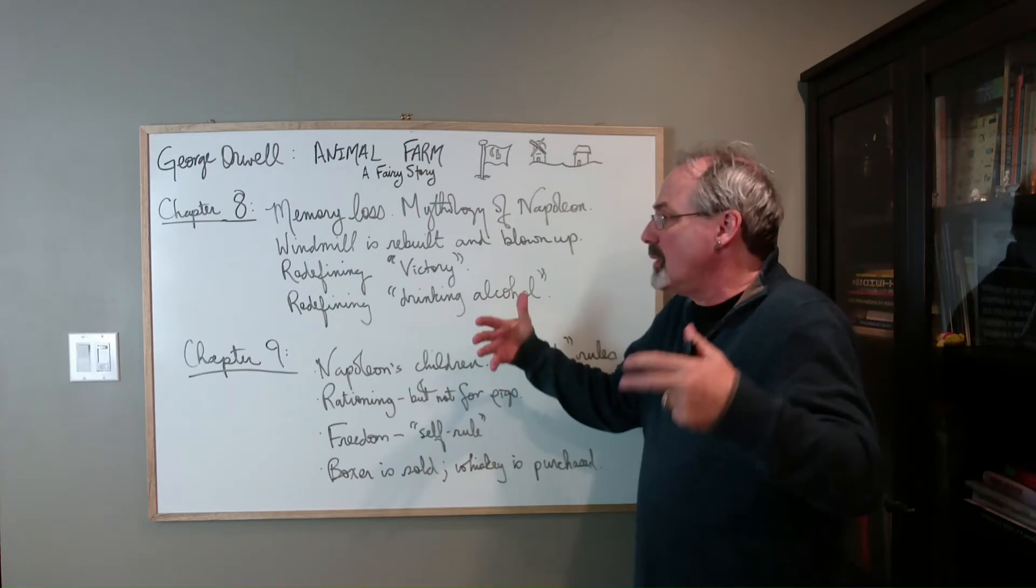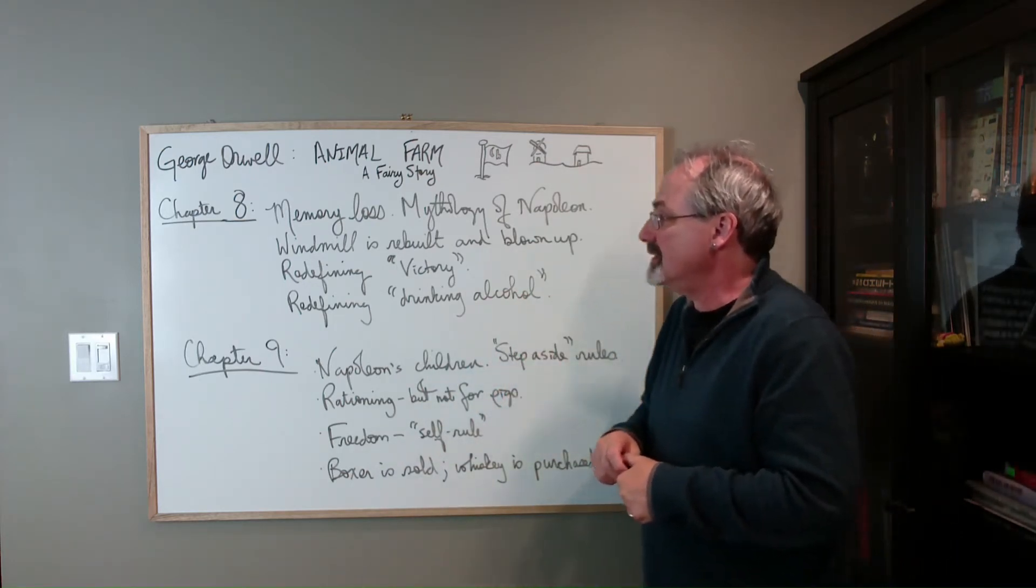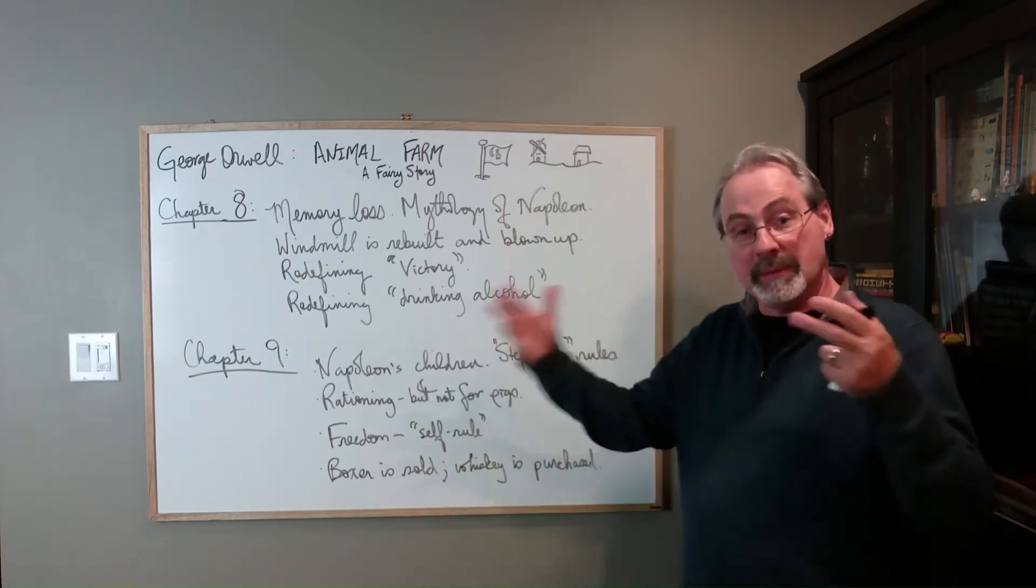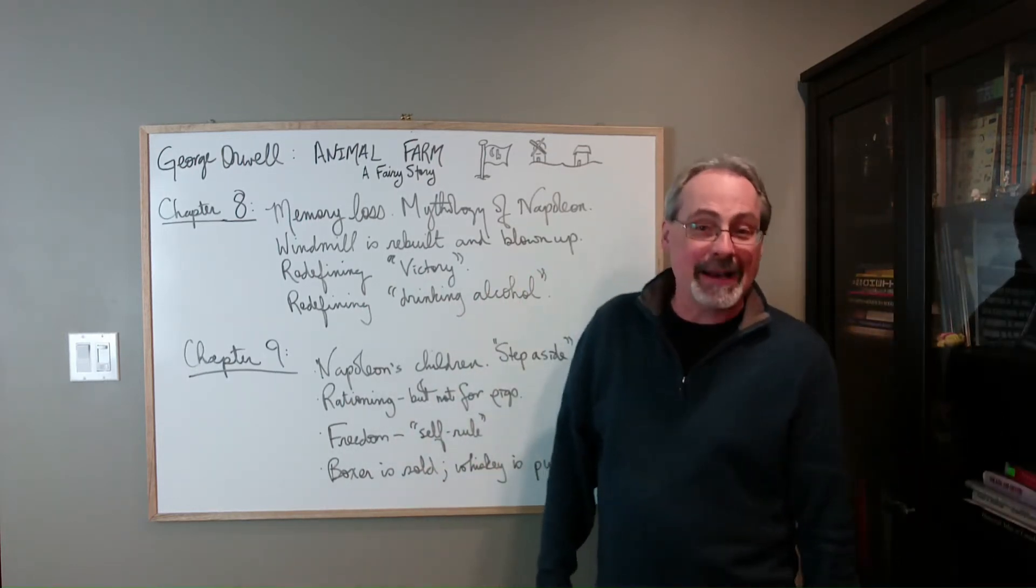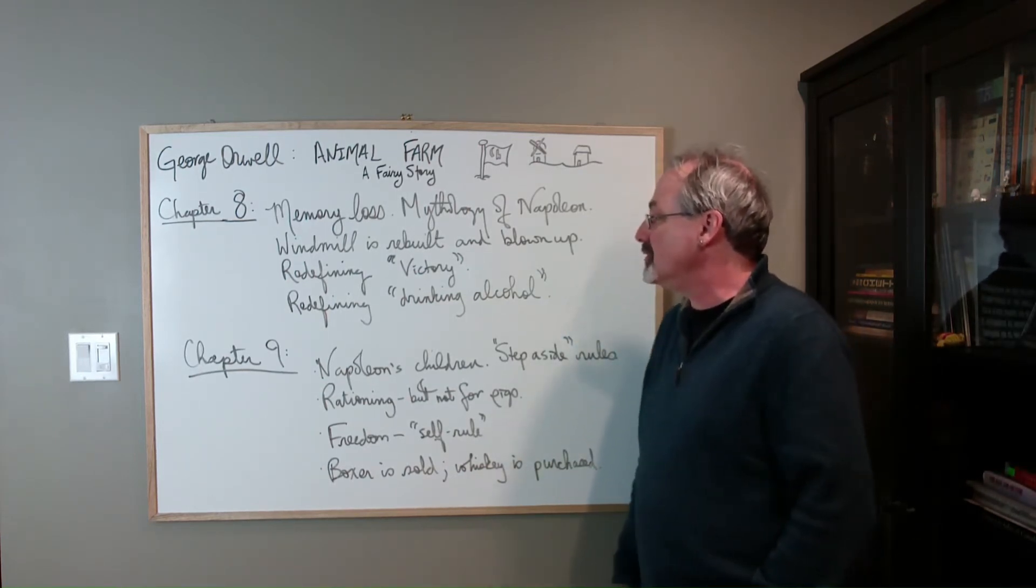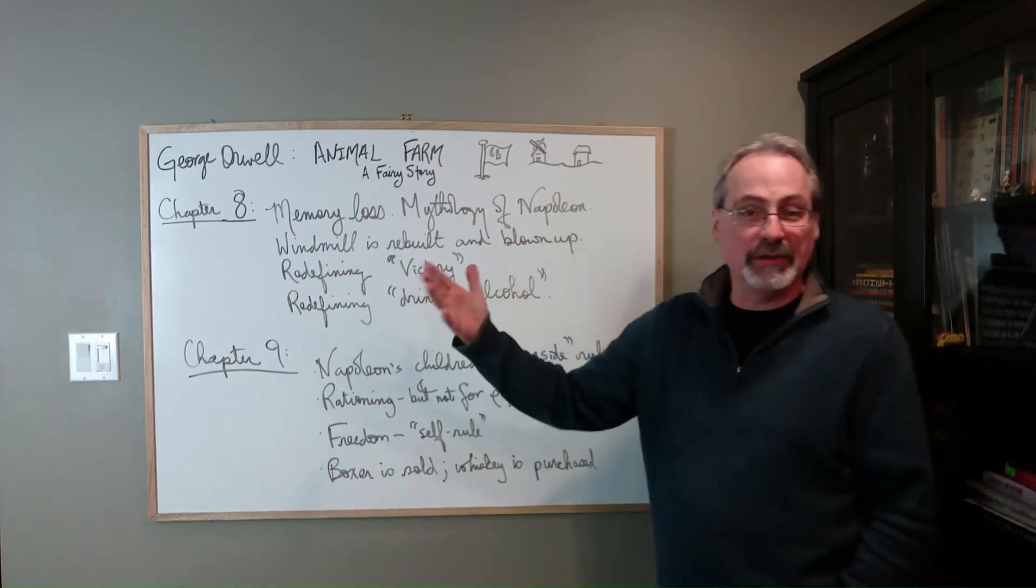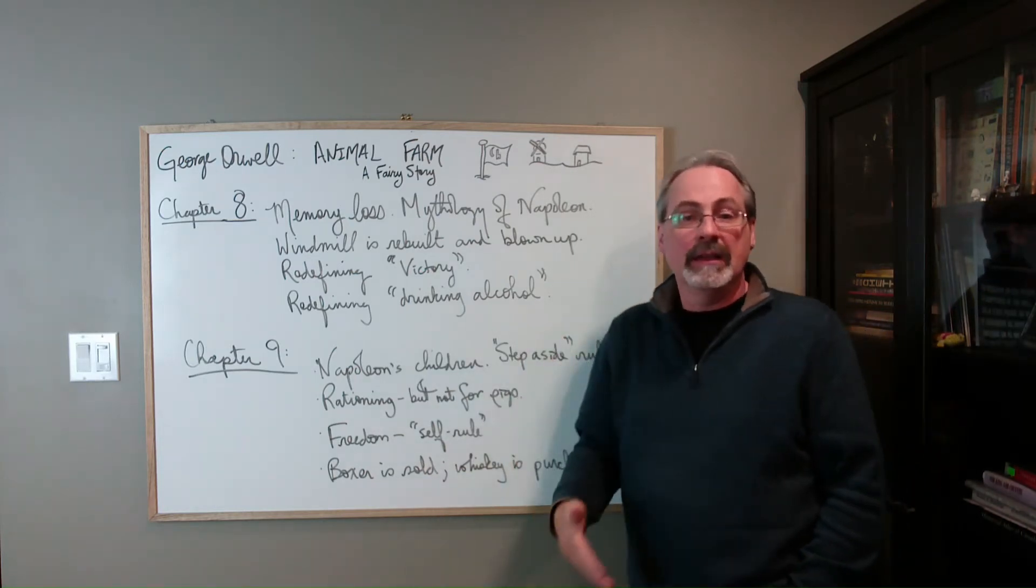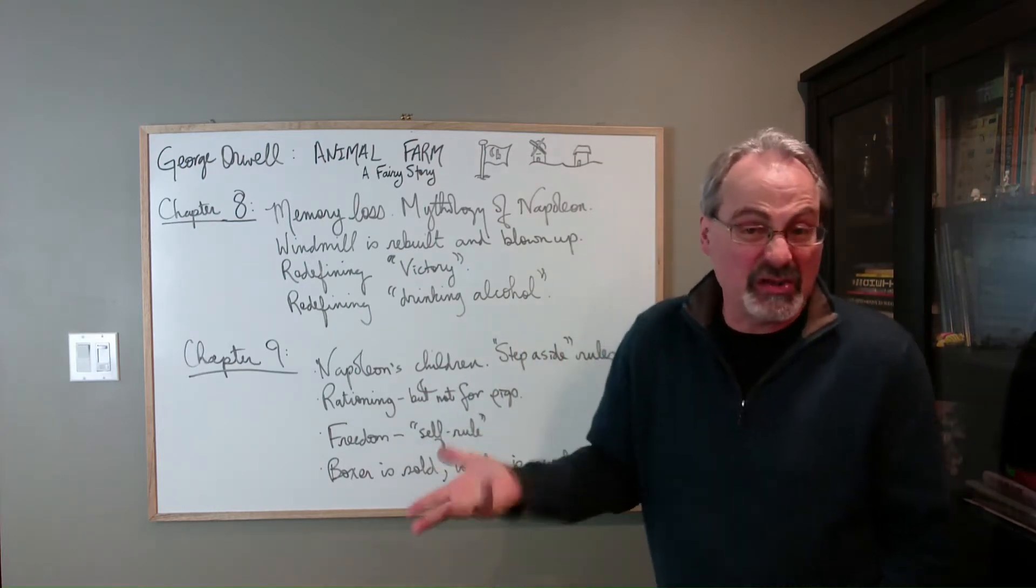And of course, we also have another attack on Animal Farm. And in this case, the windmill, which has been rebuilt, is blown up. Remember, the windmill was built and destroyed in a storm. And then there was a political way of covering that up, blaming it on Snowball. Now the windmill has been rebuilt. It's bigger, it's stronger. And this time it's blown up. It's not just toppled where you could just essentially put it back together and rebuild it. It's actually destroyed.